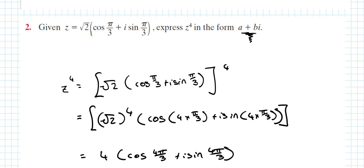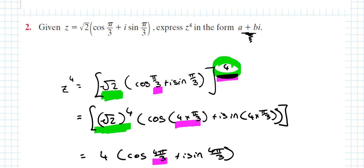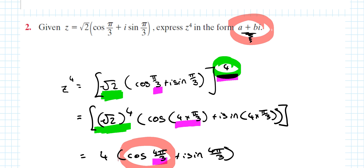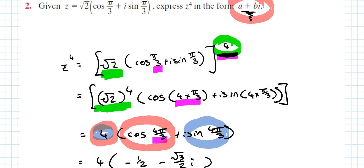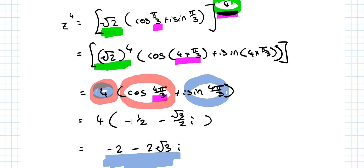Given z = √2(cos(π/3) + i sin(π/3)), express z to the power of 4 in a + bi form. Apply De Moivre's Theorem: modulus to the power gives (√2)⁴, and argument times the power gives 4 × π/3. Calculate step by step, putting values into a calculator in radians to convert to rectangular form.